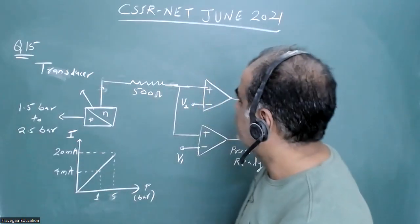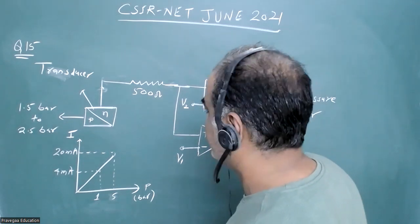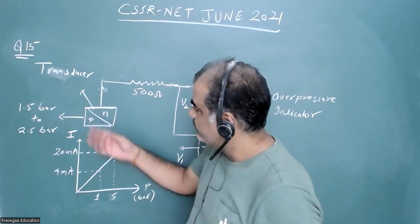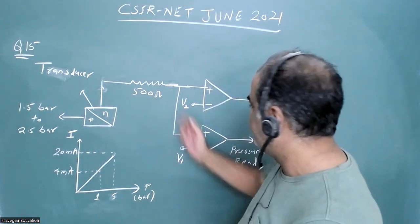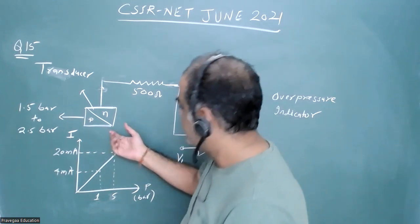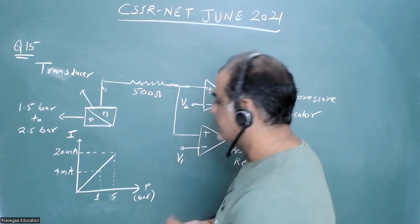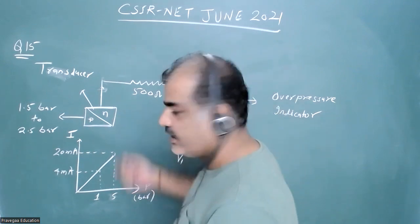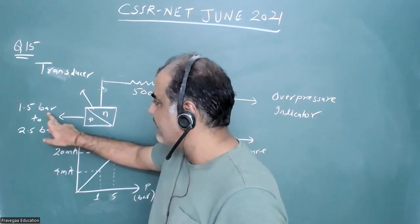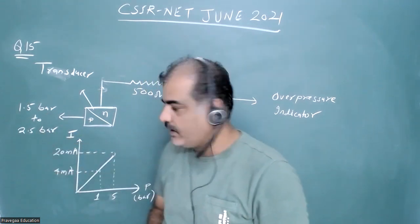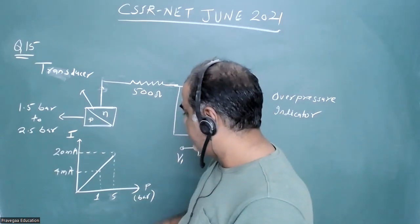Hello everyone. Let us see question number 15 from CSIR June 2021. In this question we have a circuit with a vessel whose pressure is measured by an open circuit. It is given that in this vessel we need to measure the pressure from 1.5 bar to 2.5 bar.